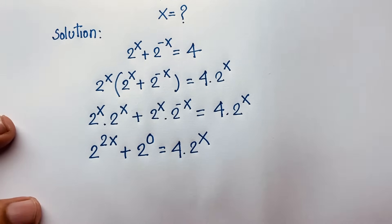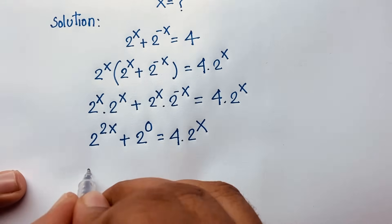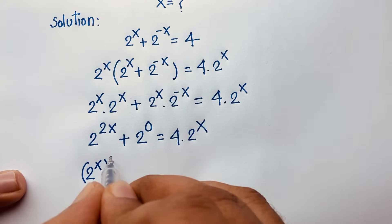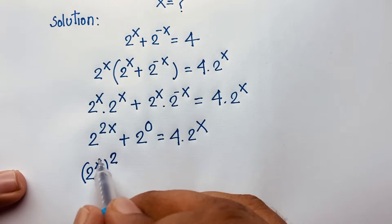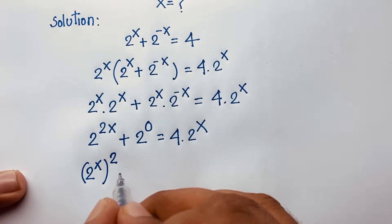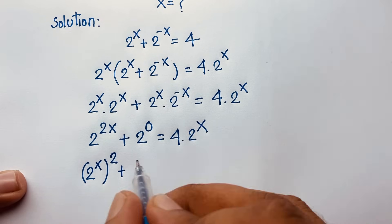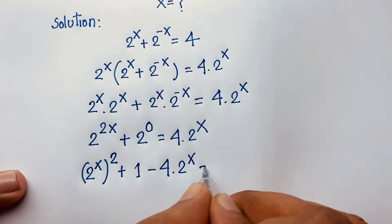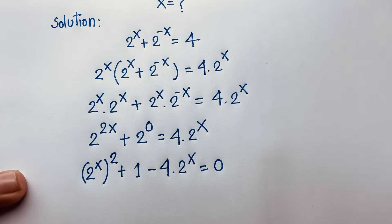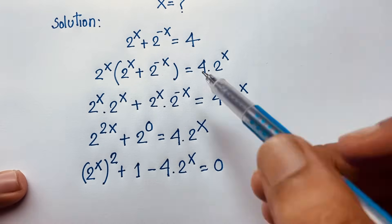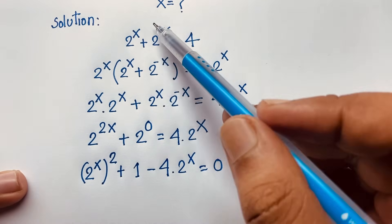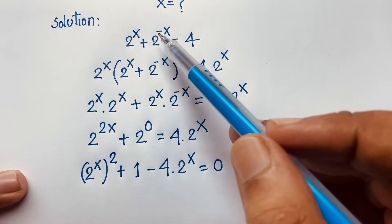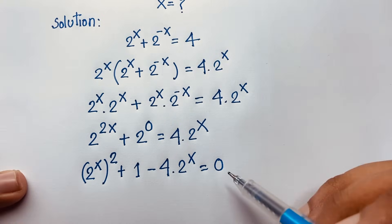You can see this expression: 2 to the power 2x plus 2 to the power 0, which is 1, minus 4 times 2 to the power x is equal to 0. You can also think of this question as: 2 to the power x plus 1 over 2 to the power x is equal to 4, where 2 to the power x is the least common denominator, and you can find out this same equation.